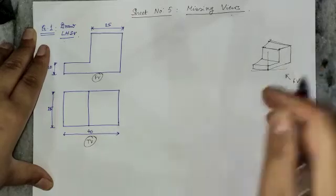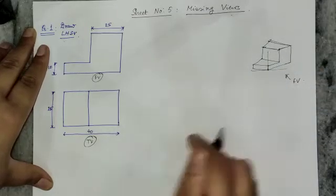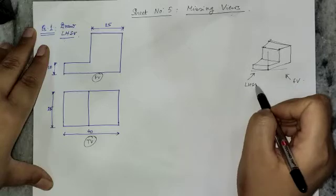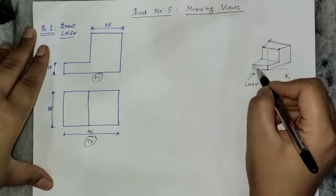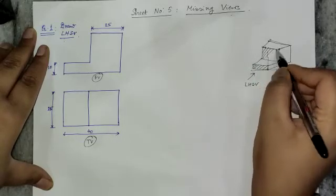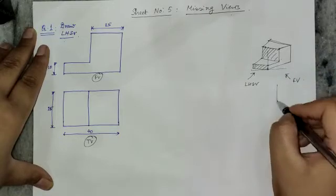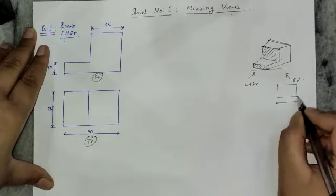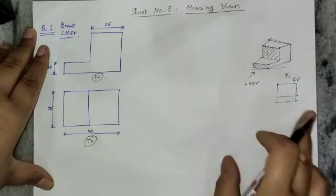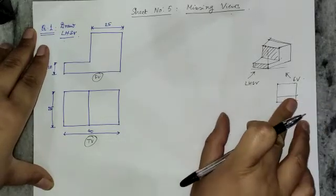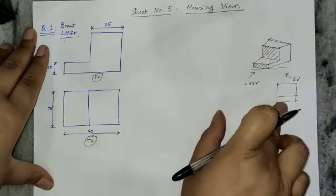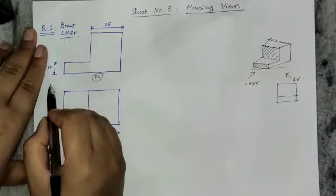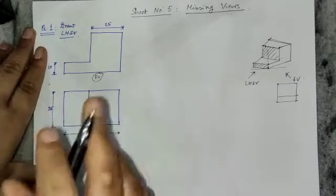Left hand side view means I will see this object from this side, so I can see this surface and this surface. So my left hand side view will be somewhat like this. But this is only the imagination — I have to draw it with correct measurements and with the correct procedure.